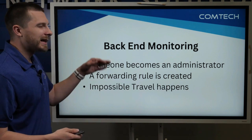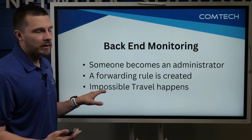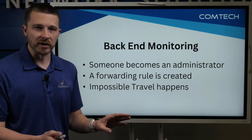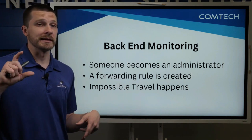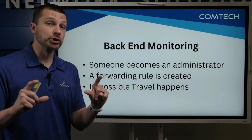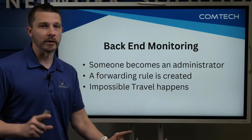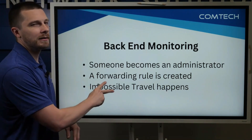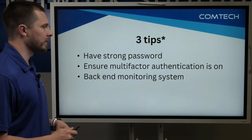The final example of back-end monitoring is what is called impossible travel. If Jim is here in Burlington, North Carolina, he logs in, and then a minute later he logs in from Saudi Arabia — that should trigger an alert because that's impossible travel. He can't be in Burlington and in Saudi Arabia at the same time. So having back-end monitoring set up is very highly recommended.